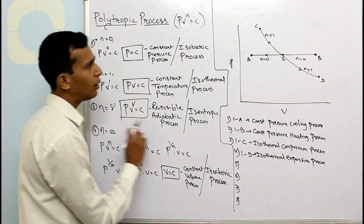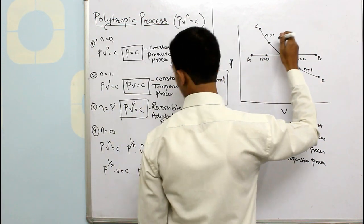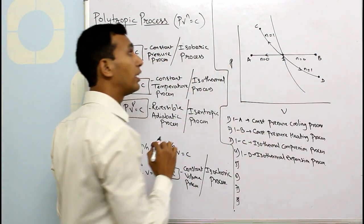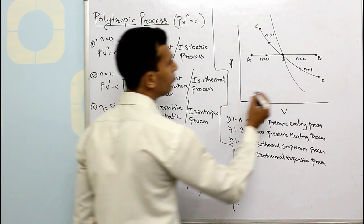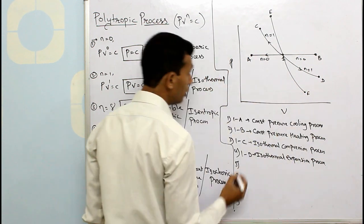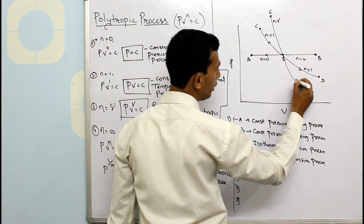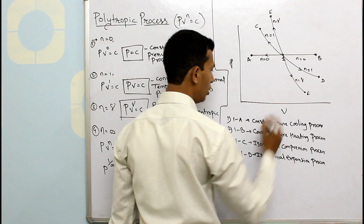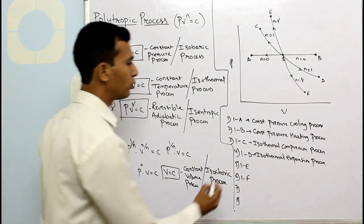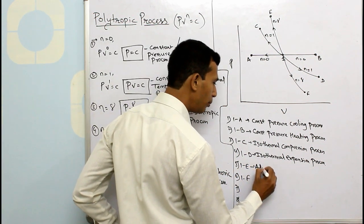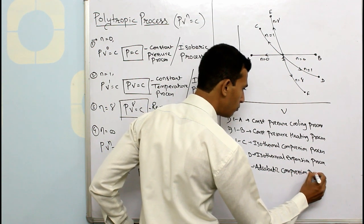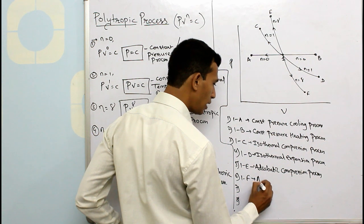For n equals to gamma — since gamma is greater than unity, the curve is steeper than the isothermal curve. Points E and F are marked. From 1 to E is the adiabatic compression process, and from 1 to F is the adiabatic expansion process.